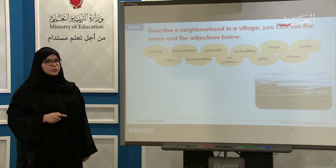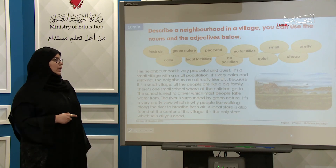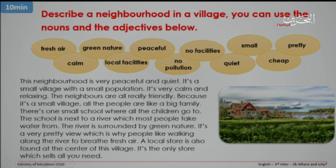Here's a sample description of a neighborhood in a village: 'This neighborhood is very peaceful and quiet. It's a small village with a small population. It's very calm and relaxing. The neighbors are all really friendly. Because it's a small village, all the people are like a big family. There is one small school where all the children go to. The school is next to a river which most people take water from. The river is surrounded by green nature — it's a very pretty view, which is why people like walking along the river to breathe fresh air. A local store is also found at the center of this village. It's the only store which sells all you need.'